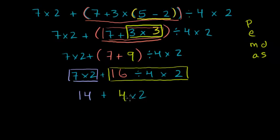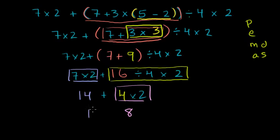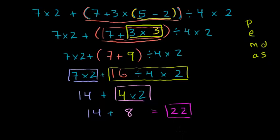Then we do the multiplication: 4 times 2 is 8. Because multiplication takes priority over addition, this simplifies to 8. So we get 14 plus 8, and 14 plus 8 is 22. That is equal to 22, and we are done.